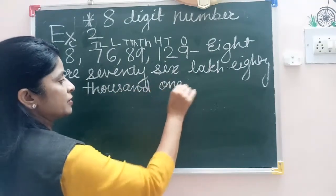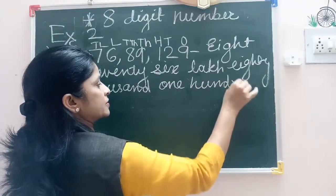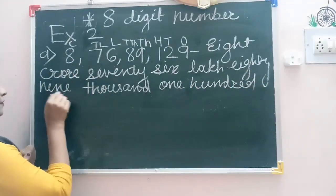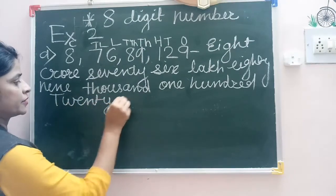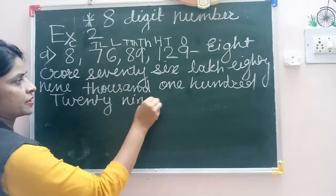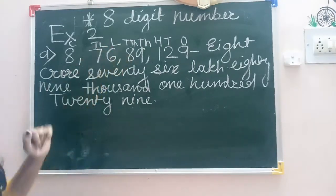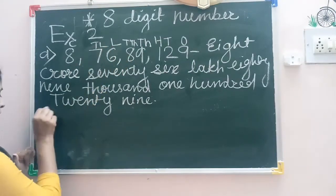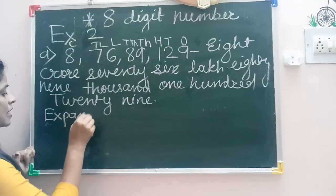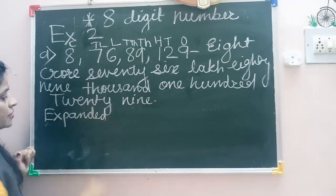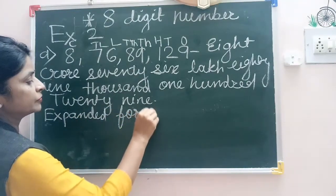The number continues: 1,000, 100, 29. And for the same number, we will write the expanded form, as we have already learned in the last period about the expanded form.